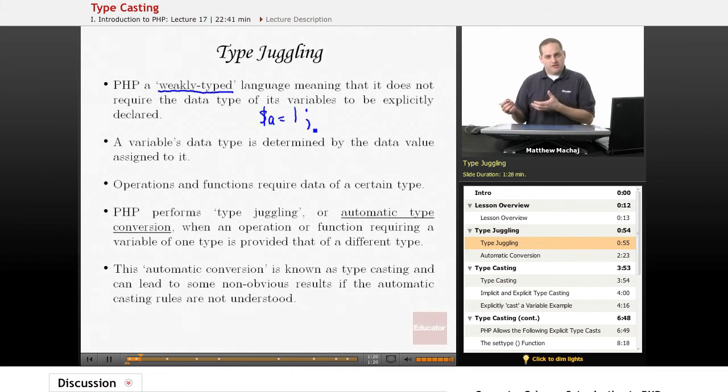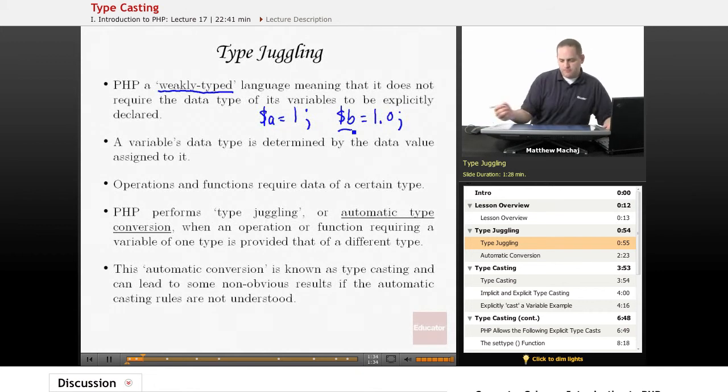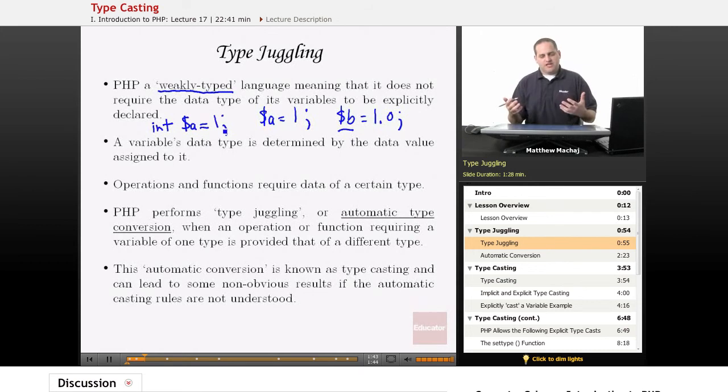So if we assign it an integer, it's going to be an integer variable. If we assign it a floating point number, PHP knows that B is a floating point number. This is different from strongly typed languages, where, for example, in another language you might, if you want to declare A to hold an integer, you'd actually have to preface it with the int keyword, which says that A is a data type integer.